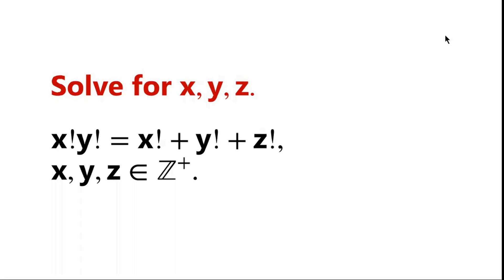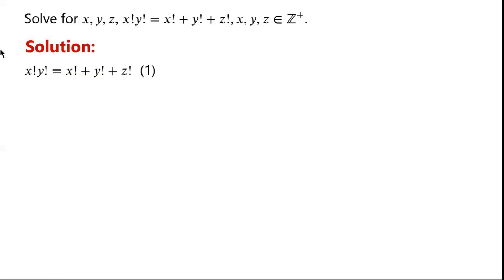Solve for x, y, z. x factorial times y factorial equals x factorial plus y factorial plus z factorial. x, y, z are positive integers. This is the given equation.